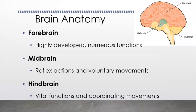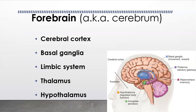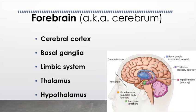The forebrain, also called the cerebrum, is split into the cerebral cortex — the noodley-looking outer layer — the basal ganglia shown in blue, the limbic system, and the thalamus and hypothalamus. The brain is also described in terms of two hemispheres: the left hemisphere and the right hemisphere. So everything in the forebrain, you have two of — one on each hemisphere.